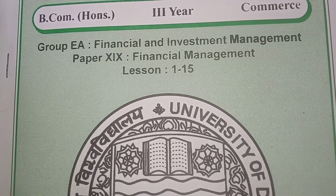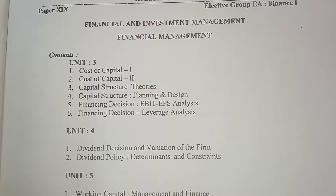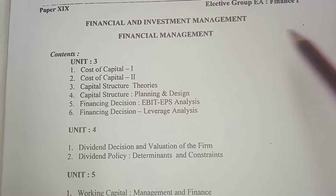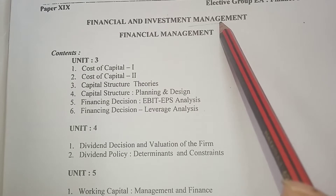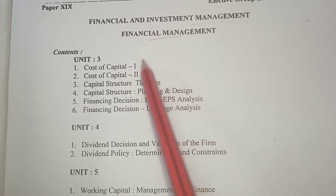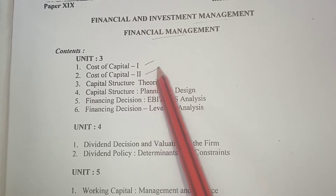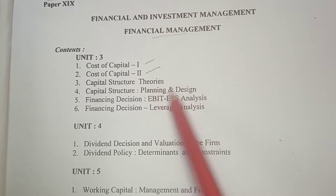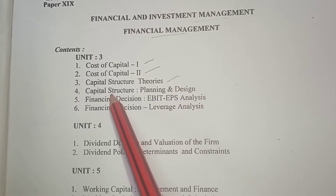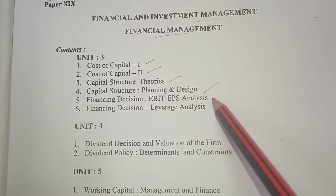So let's see our syllabus. Unit first and second are of investment management. This is your financial management. Your first chapter is cost of capital, then cost of capital second, then capital structure theory related, then capital structure planning and design, then financing decision.